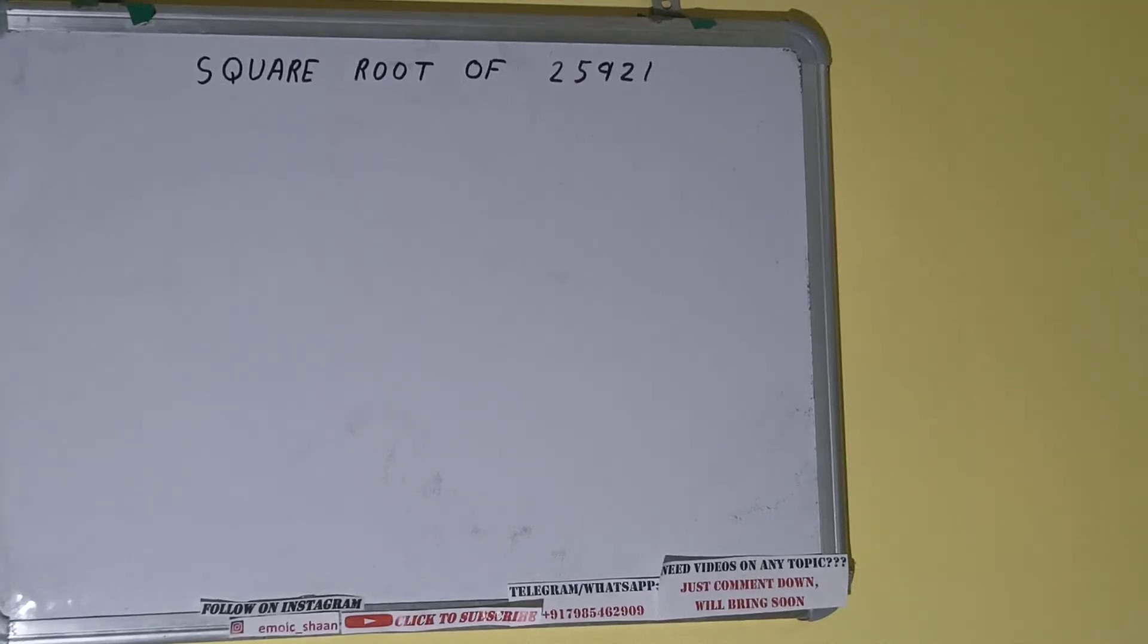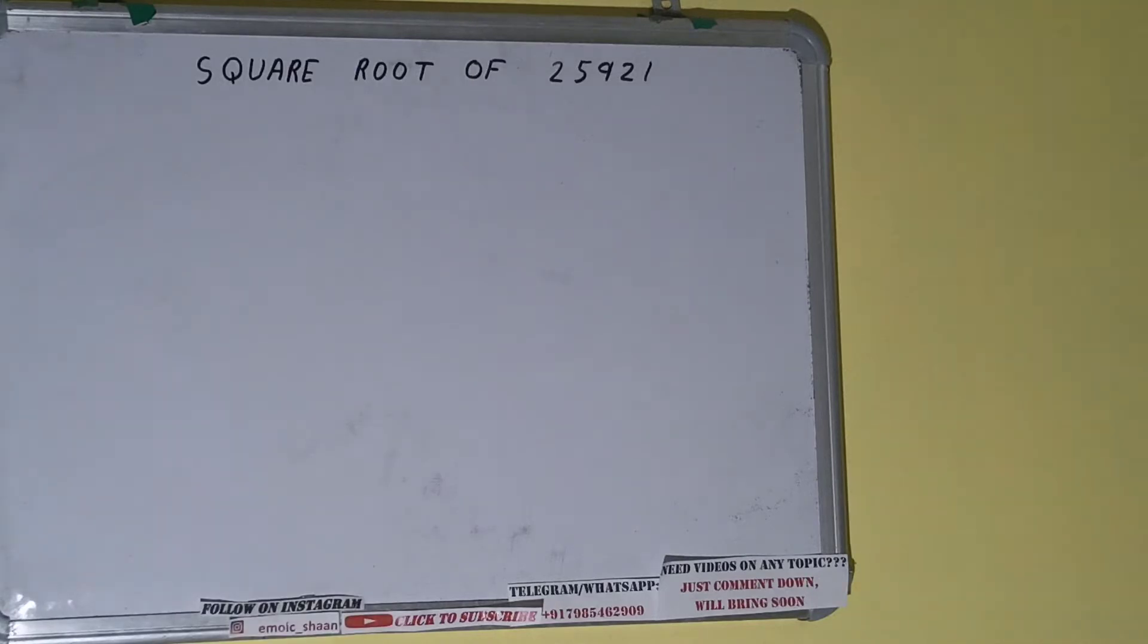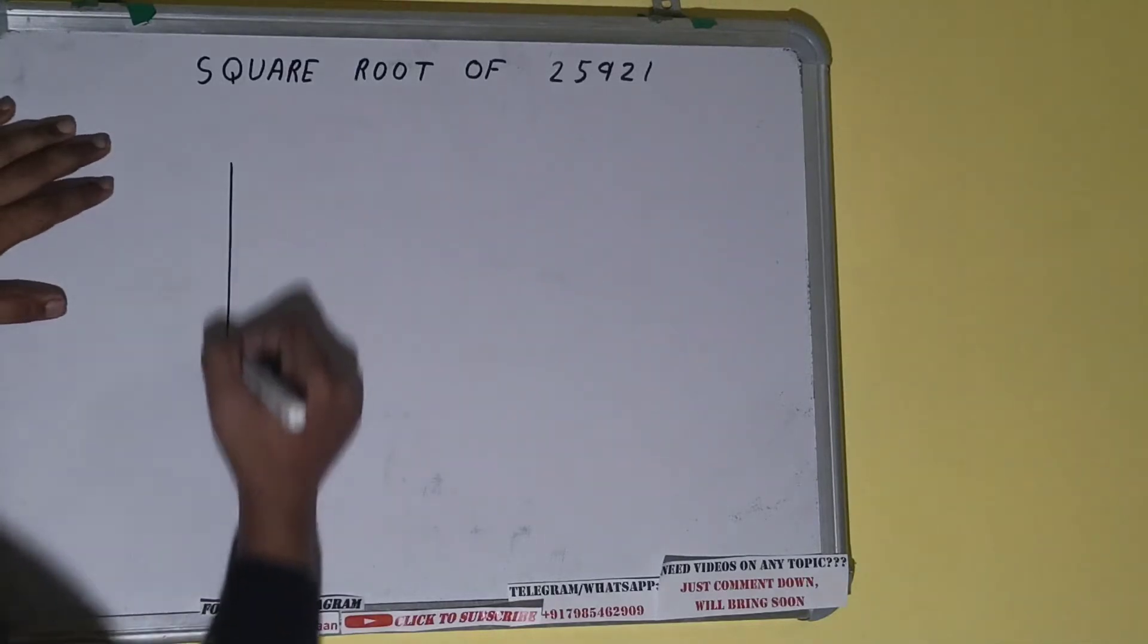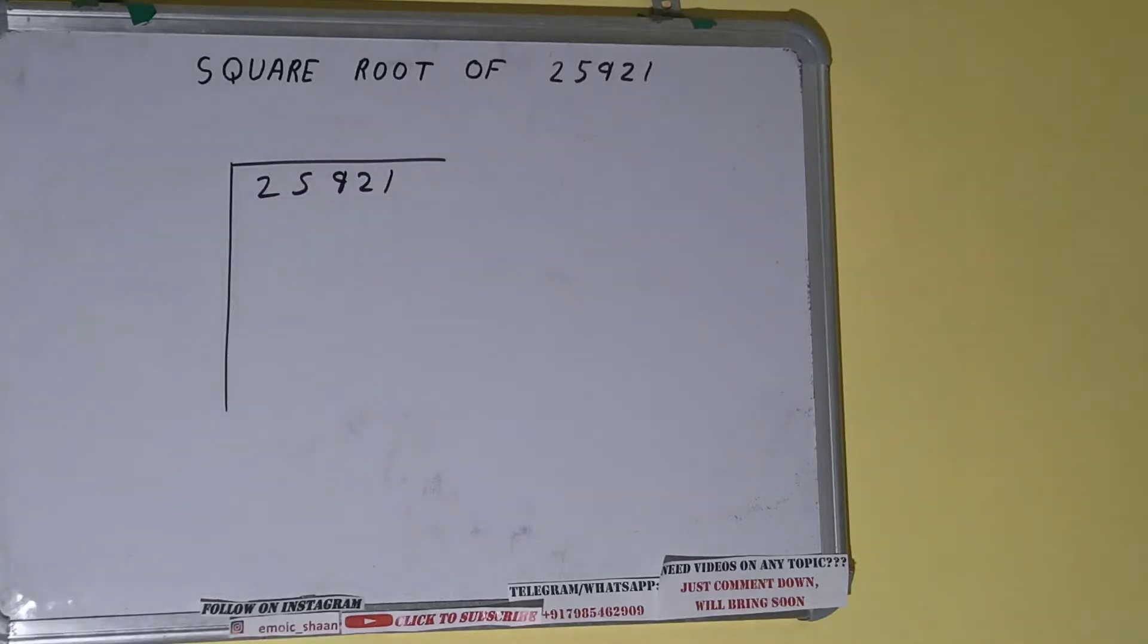Hello friends, and in this video I'll be helping you with the square root of the number 25921. So let's start. First we need to write the number like this: 25921. The next thing we need to do is...